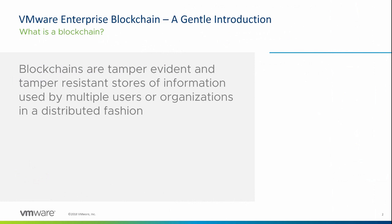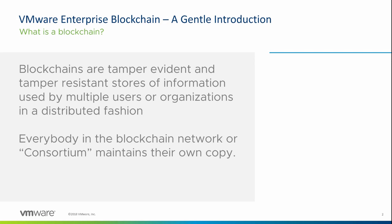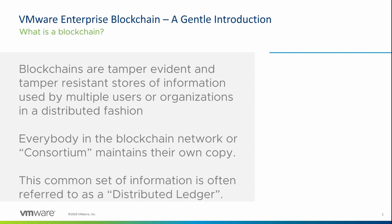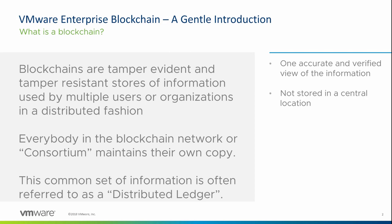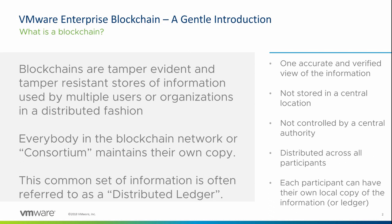So, what is a blockchain? A blockchain is a tamper-evident and tamper-resistant store of information used by multiple users or organisations in a distributed fashion. Everybody in the blockchain network, or consortium as we like to call them, maintains their own copy of the blockchain. This common set of information is often referred to as a distributed ledger. Important parts about this are: there is one accurate and verified view of the information; it's not stored in a central location; it's not controlled by a central authority; it is distributed across all participants, and each participant can have their own local copy of the information or distributed ledger.